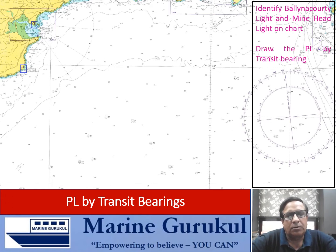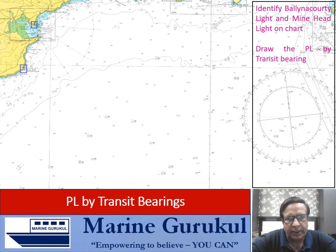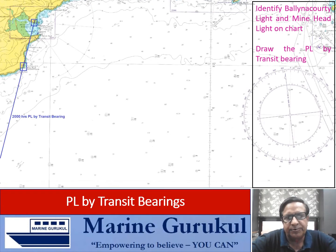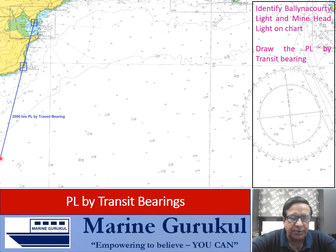Now we draw the PL by transit bearing — that means we join these two landmarks and extend them on the side on which the ship is likely to be. You can see these two have been joined and extended on the side where the ship is likely to be, and this becomes the 2000 hours PL by transit bearing.